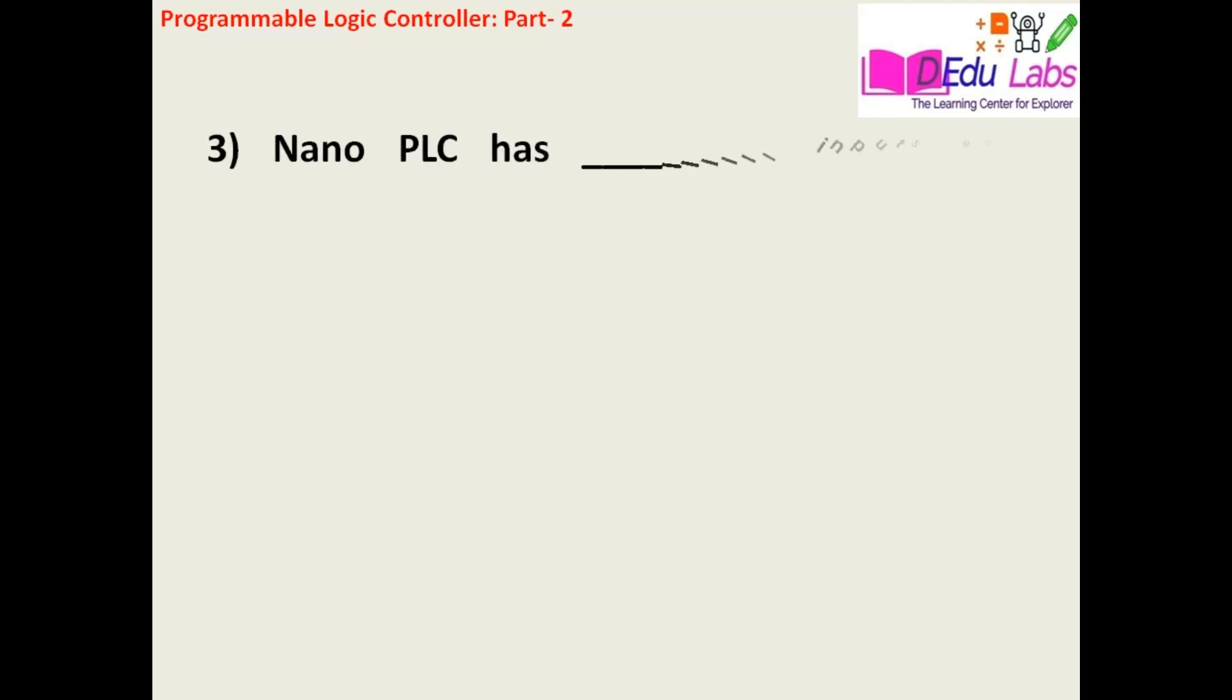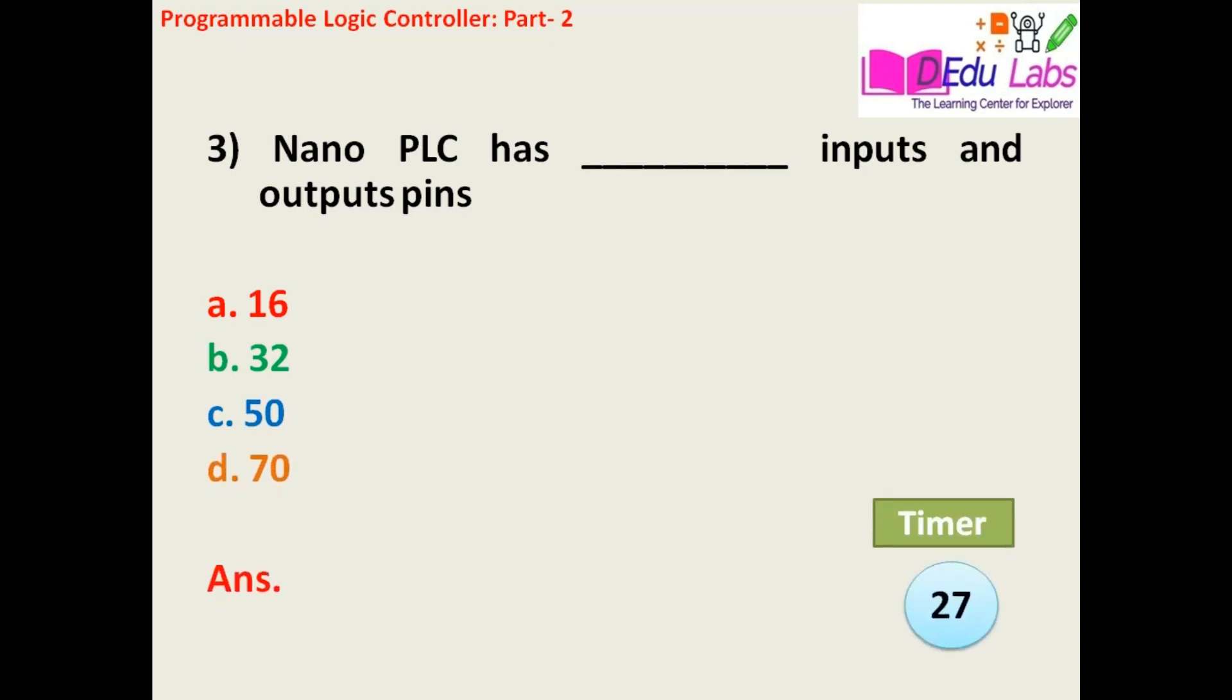Third question: Nano PLC has blank inputs and outputs pins. Option A: 16, Option B: 32, Option C: 50, Option D: 70.